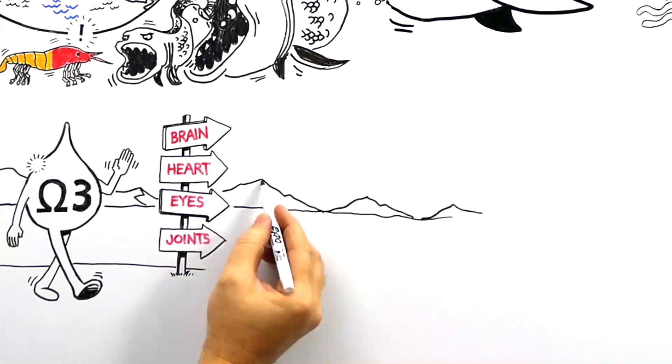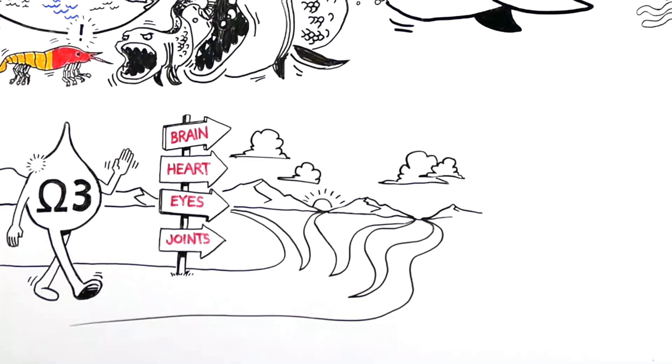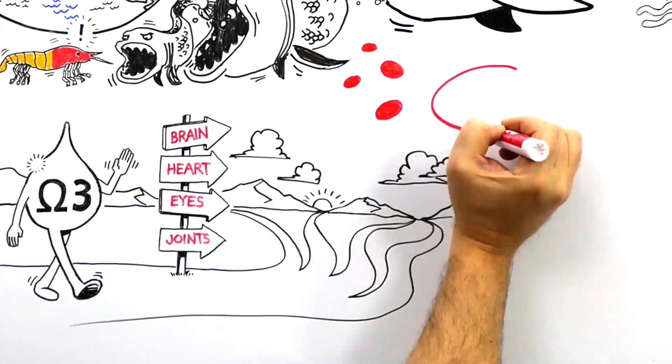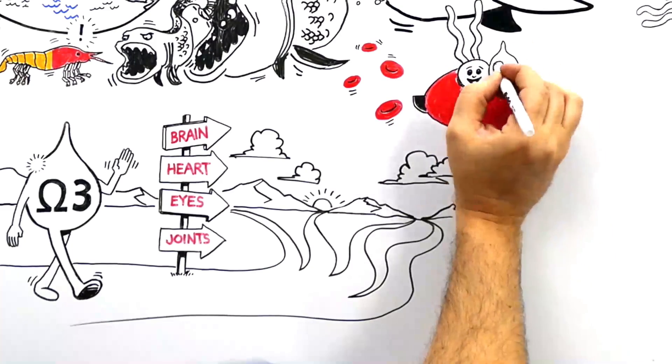But they can't get to your tissues and organs if they don't get into your blood first. So, how can you make sure the Omega-3s you take are getting into your tissues?